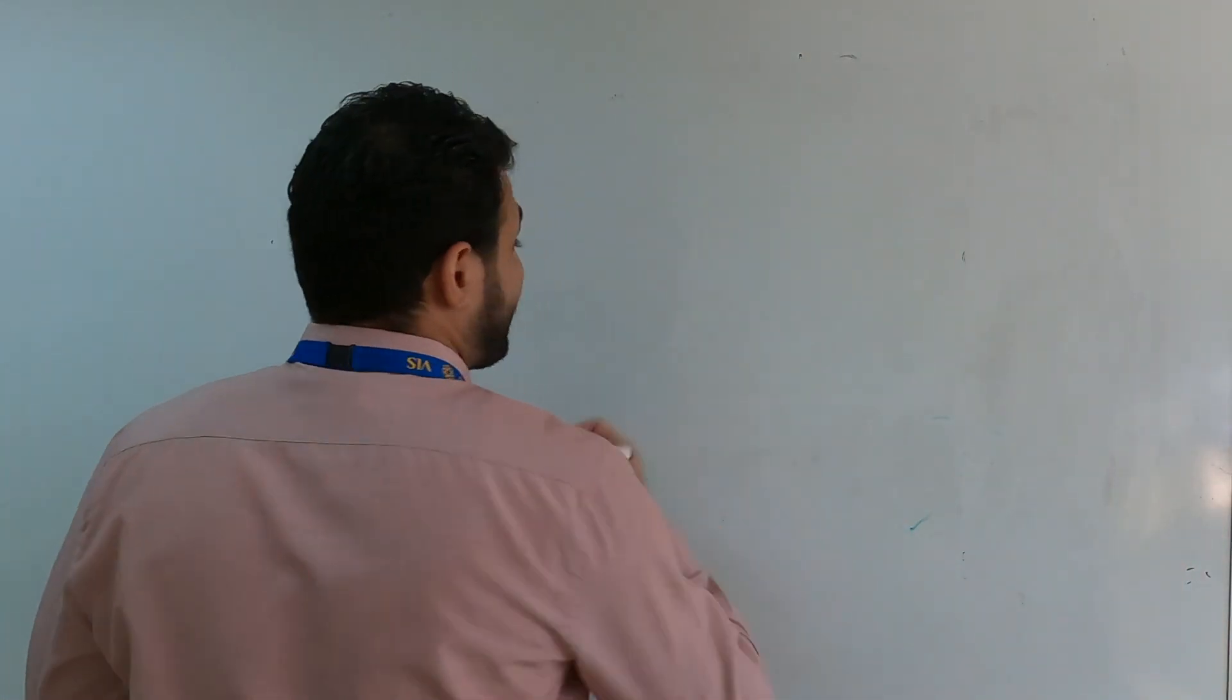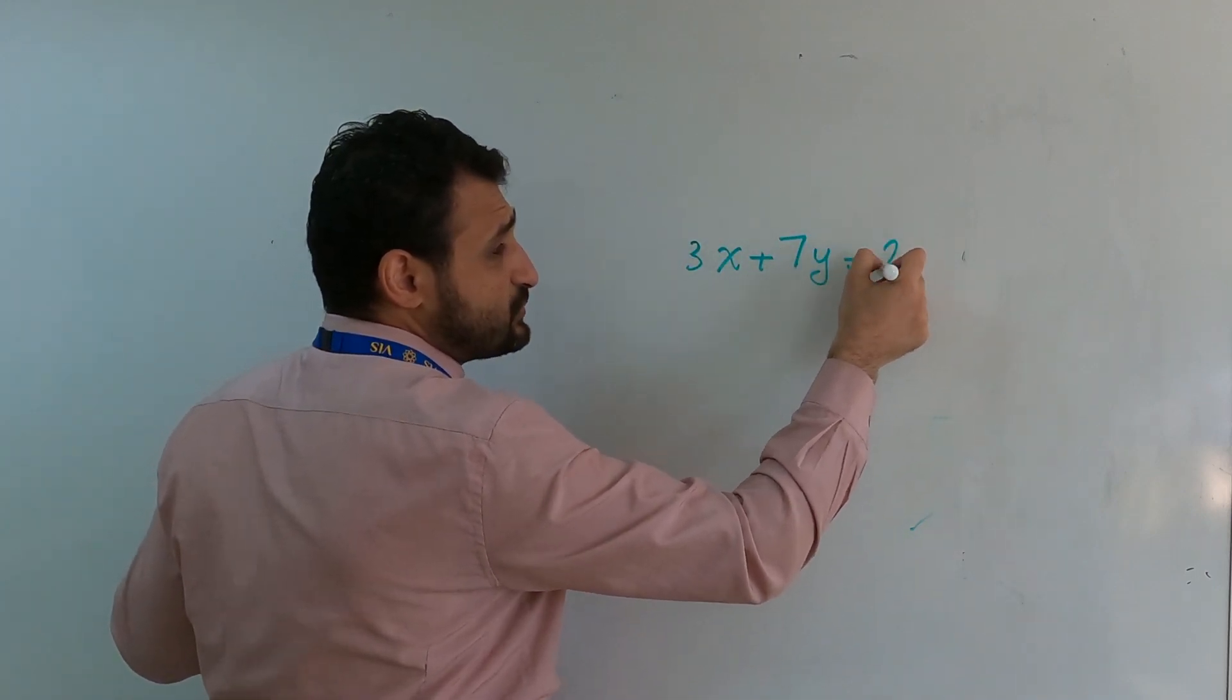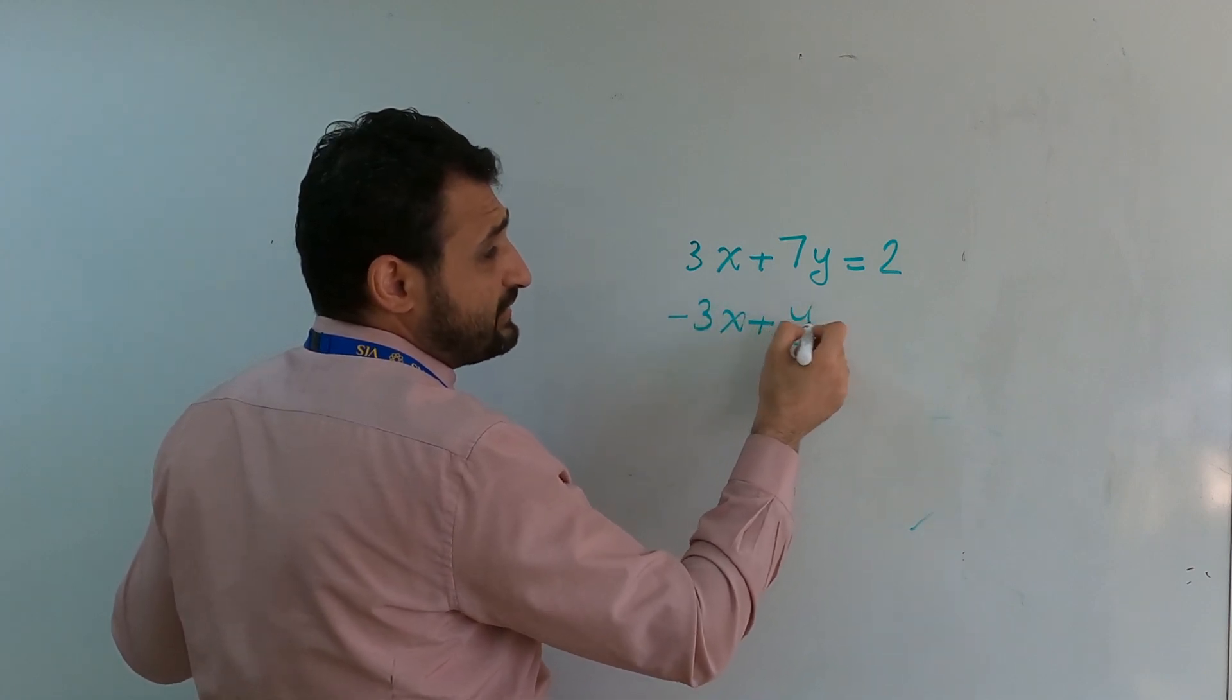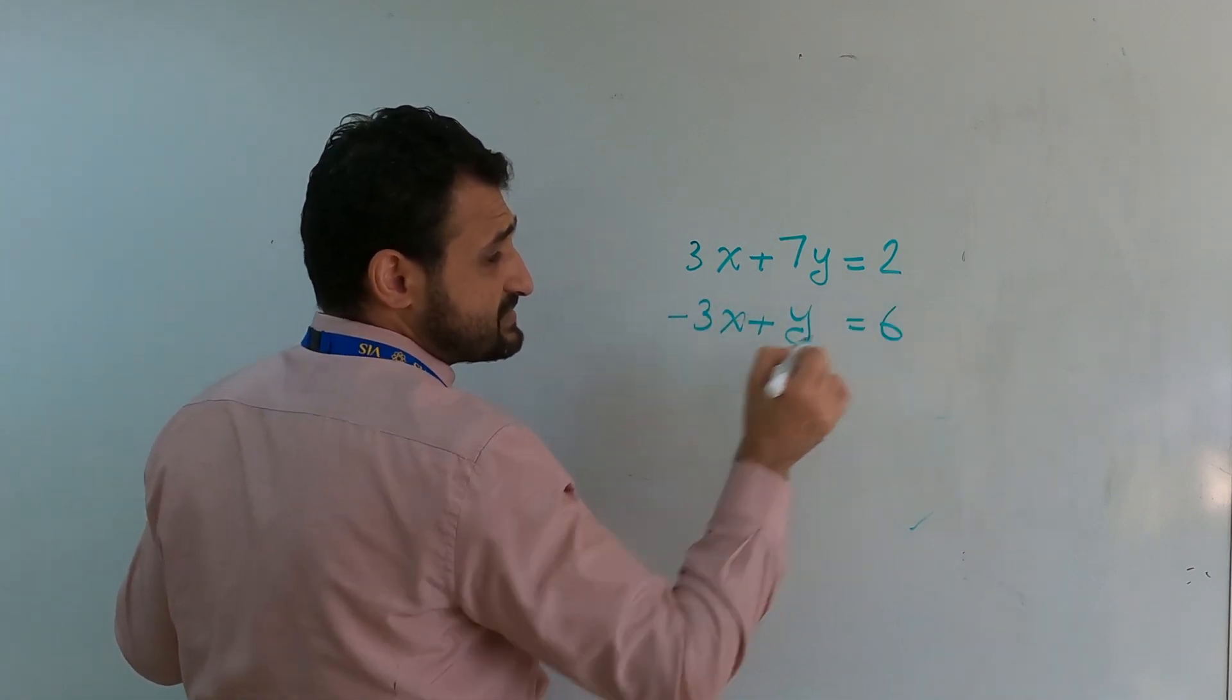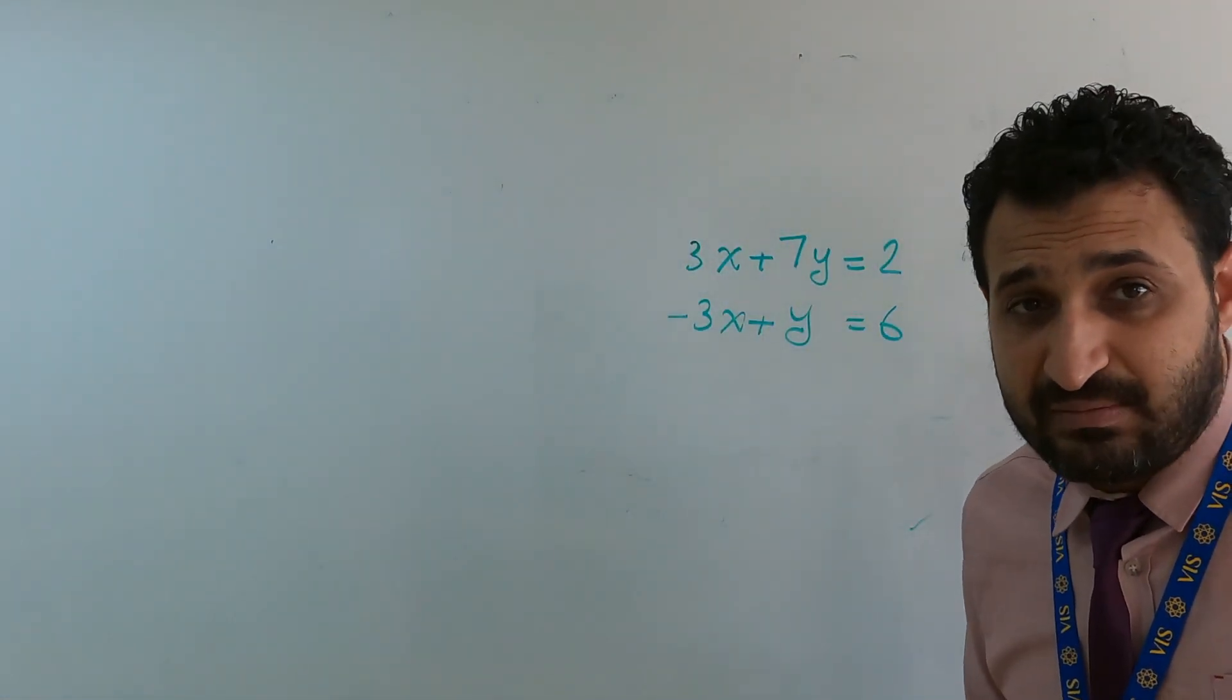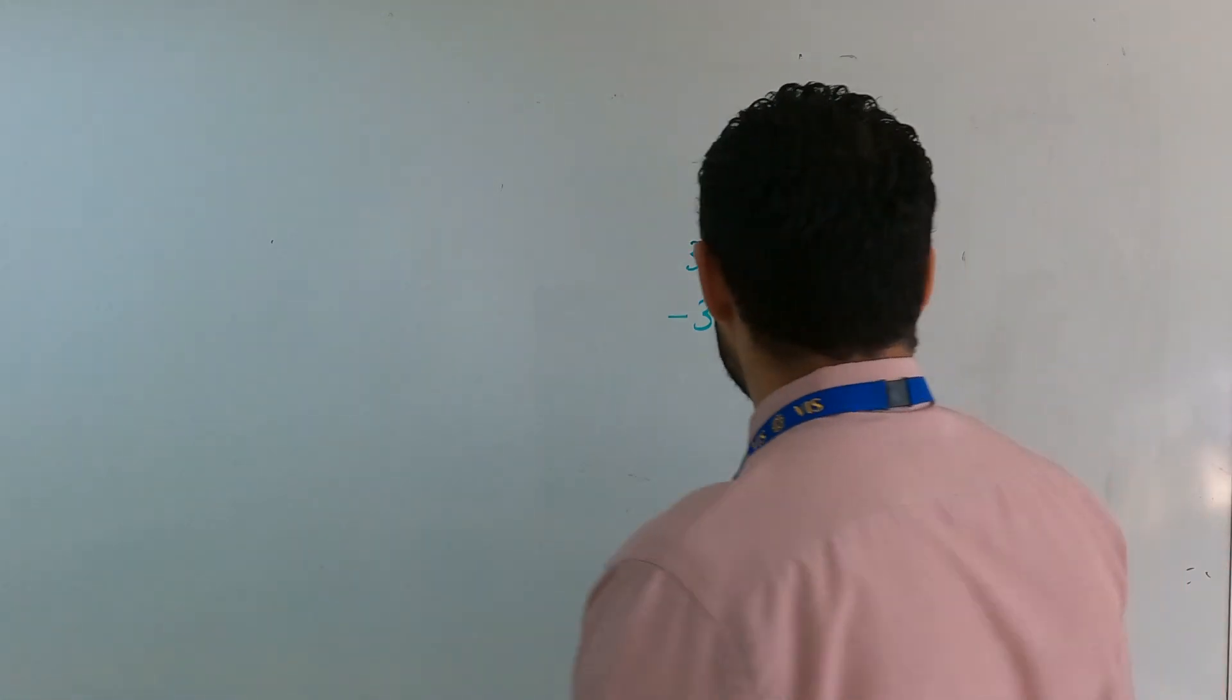Example: 3x plus 7y equals 2, negative 3x plus y equals 6. The question is solve this system of linear equations by elimination. That means I want you to use elimination—don't use graphing or substitution.